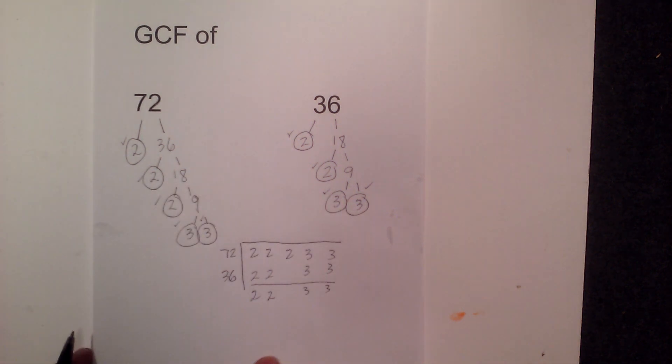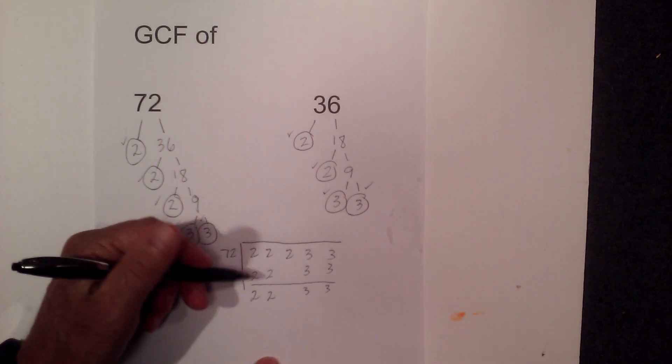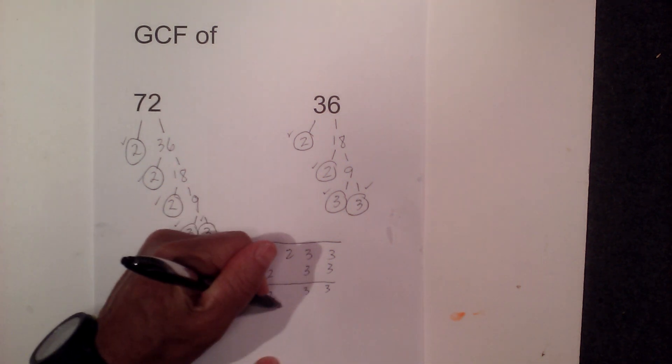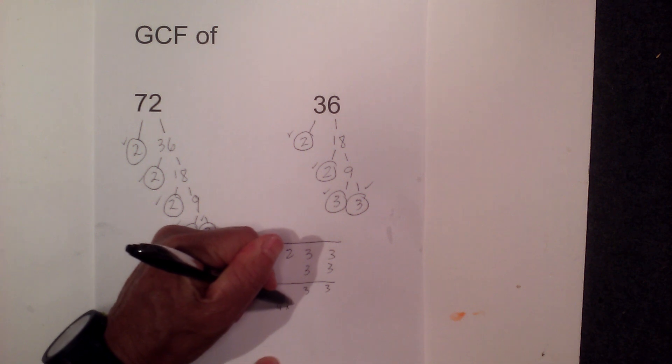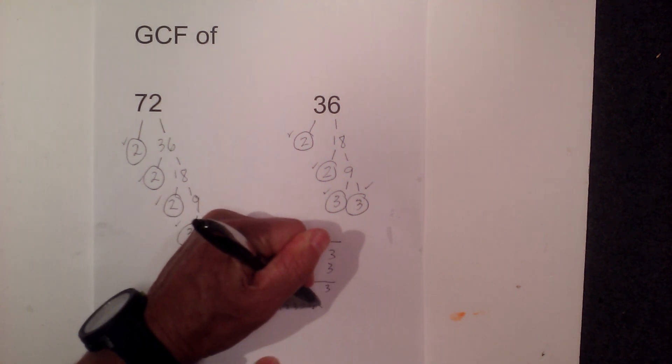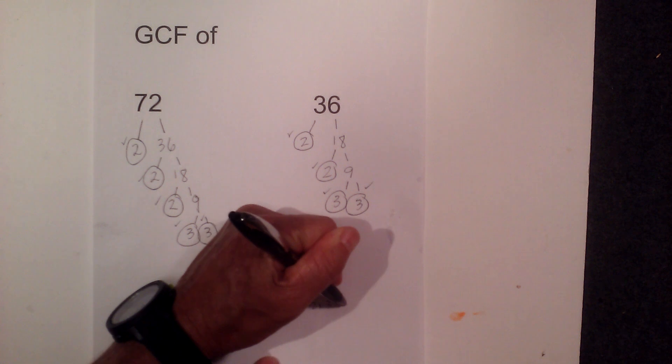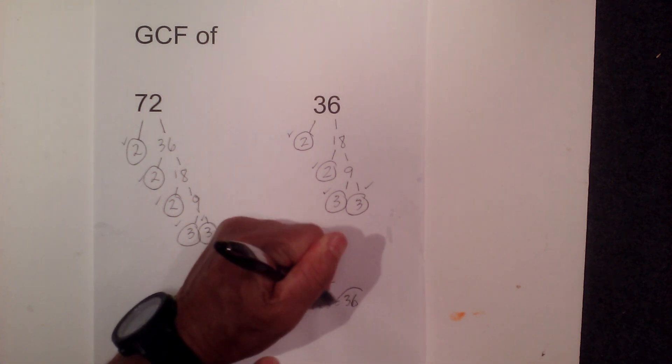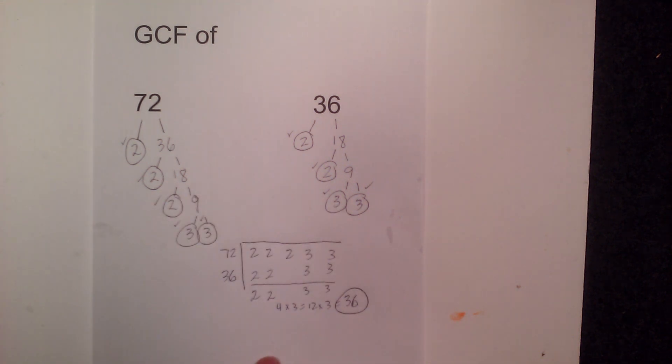And then the 3 and the 3. And then I just multiply this together. 2 times 2 is 4, 4 times 3 is 12, and 12 times 3 equals 36.